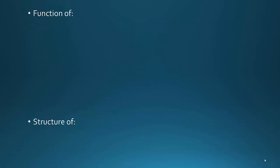The next section, you need to know specifics about certain structures. The thalamus — its function is it serves as the major relay station in the brain. This is the area that acts as the switchboard, connecting the lower parts of the brain and spinal cord up to the higher parts of the brain.